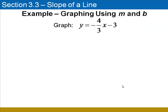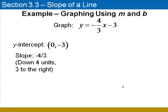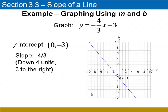Here's another example. We're going to graph y equals negative 4/3 x minus 3, another line whose equation is in slope-intercept form. We know that the y-intercept is at (0, negative 3), and the slope is negative 4/3, which tells us the graph moves down 4 units for every 3 units it moves to the right. Plot the y-intercept at (0, negative 3), then from that point count down 4 and 3 to the right. Put a point there and draw the line that passes through these two points.